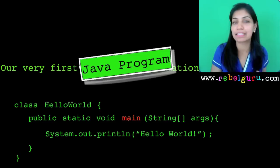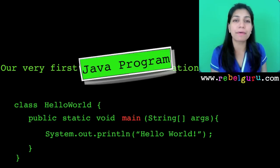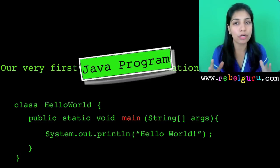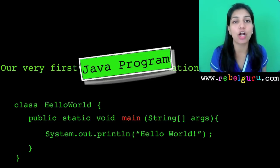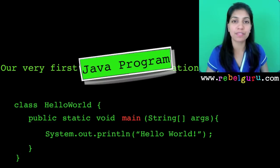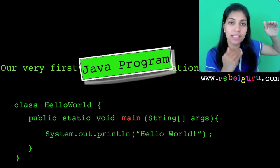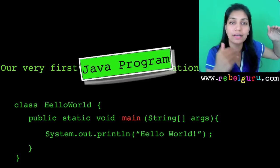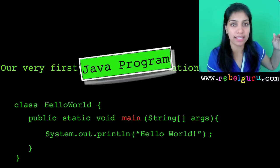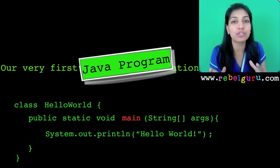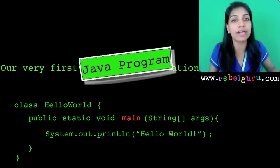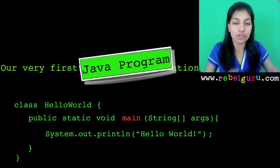Next, you have the keyword 'main' with round brackets, which says this is the main method — start executing from here. Within the round brackets after main, you have 'String[] args'. This is a formal parameter to the main method — a String array called args. Any interesting program would want to take input from the user. Once the program starts executing, it asks the user to enter input. However, another way to give input to a program is to pass it along with the command to run the program.